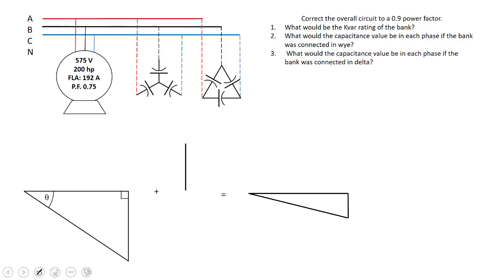In this case we've got a 575 volt motor, 200 horsepower and an FLA of 192 with a power factor of 0.75. The 200 horsepower isn't really valuable information here because that always refers to the power output of the motor and we don't know what efficiency this is operating at.